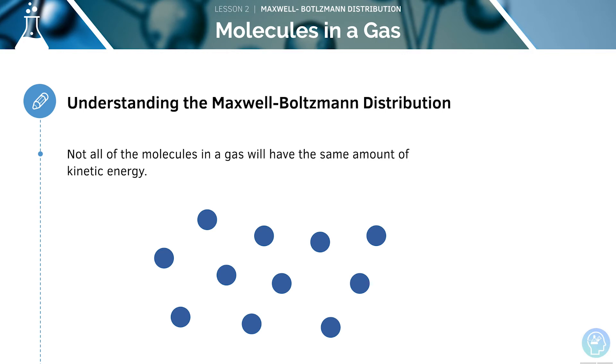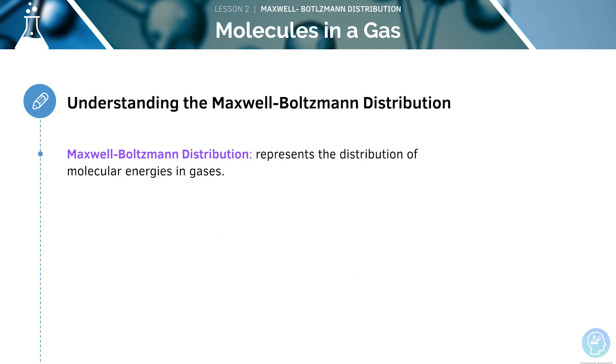If you consider all the molecules in a gas, not all of the particles will have the same amount of kinetic energy. Some will have lots of kinetic energy, whilst others will have less. We can therefore plot a Maxwell-Boltzmann distribution graph to show the distribution of energies between different molecules.